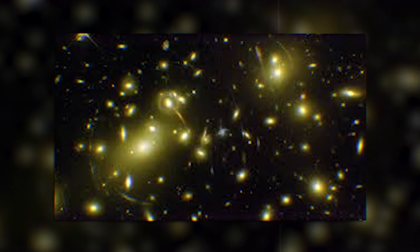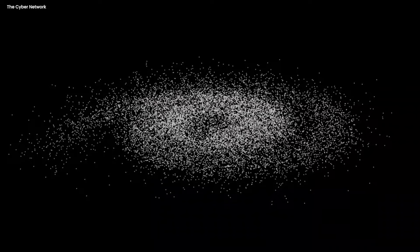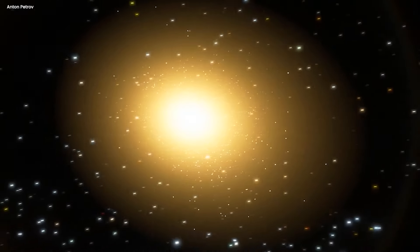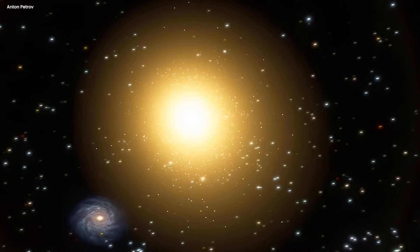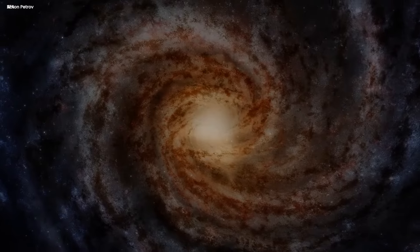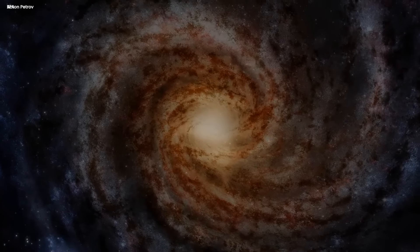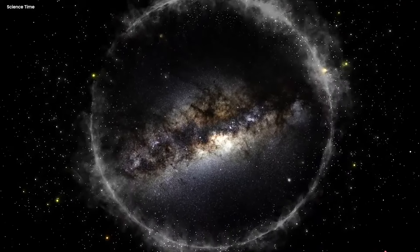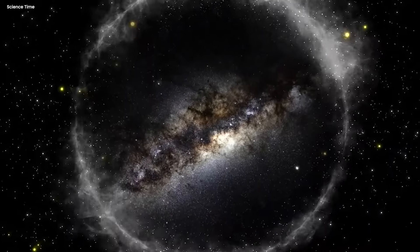So two giant galaxies act like a cosmic magnifying glass, bending the light from an even more distant galaxy behind them. The two closer galaxies look like eyes, and the distorted, stretched-out image of the most distant one creates a smile. It's a pretty neat example of how gravity can play tricks on light.